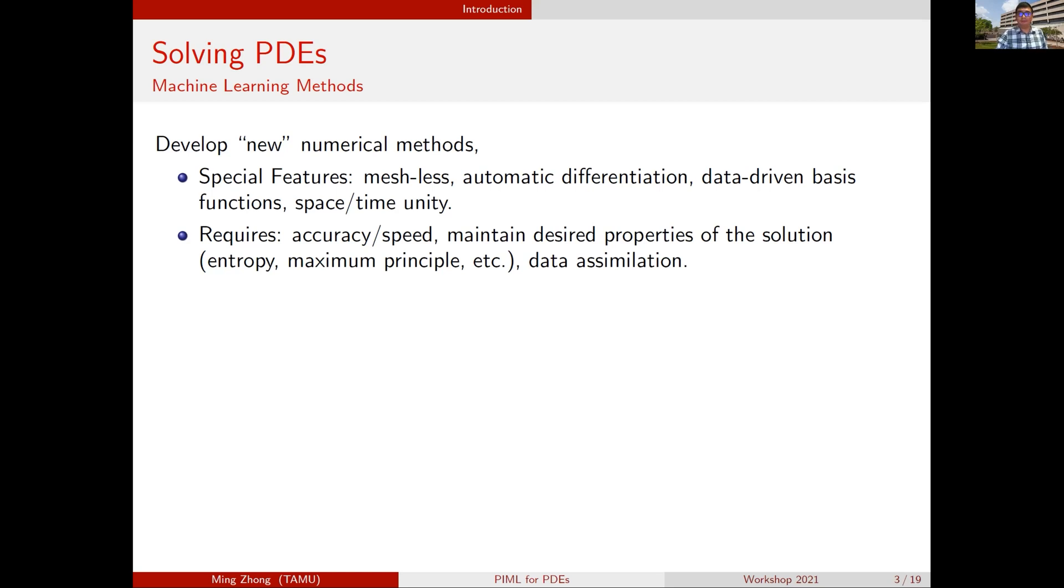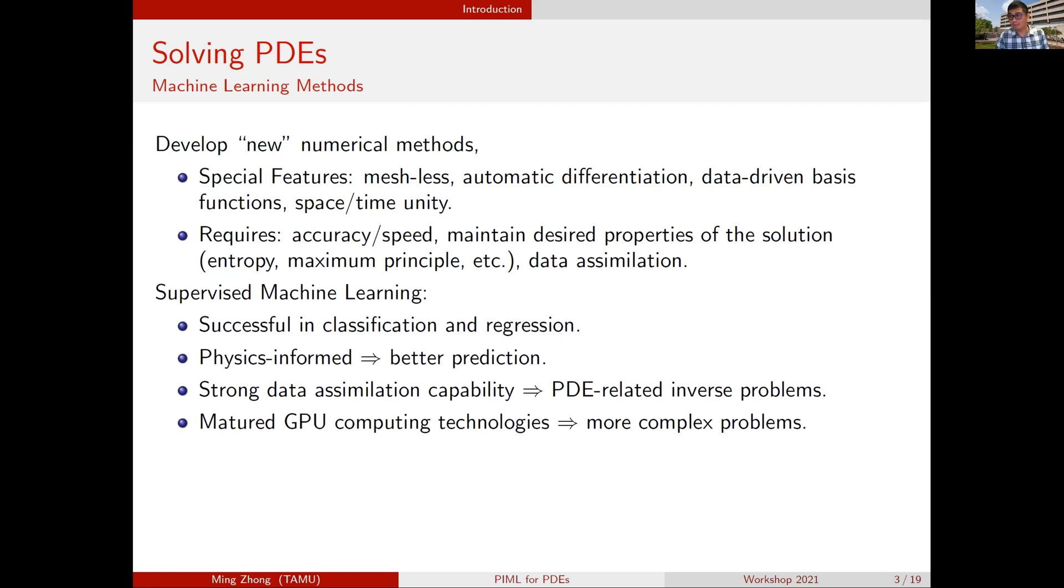At the same time with all these special features, we want to also maintain certain accuracy or certain combination of accuracy and speed, and maintain desired features of the solutions. How can we design these new methods? We look into the now successful supervised machine learning because it's been really successful in image classification and regression. If we add the physically informed property to it, it can do a lot better in prediction.